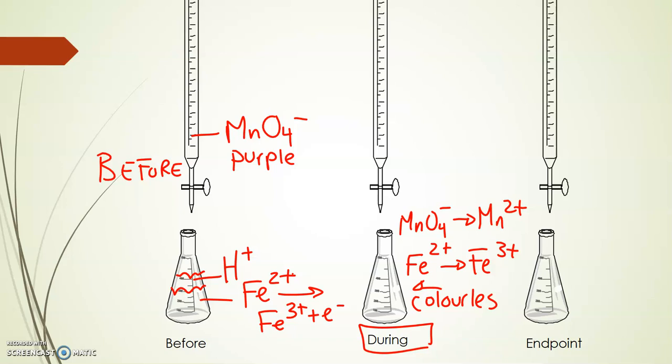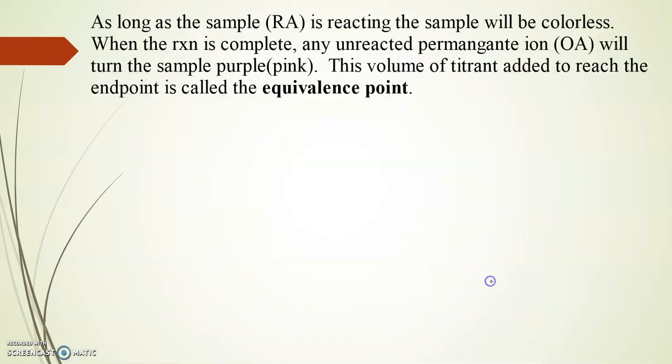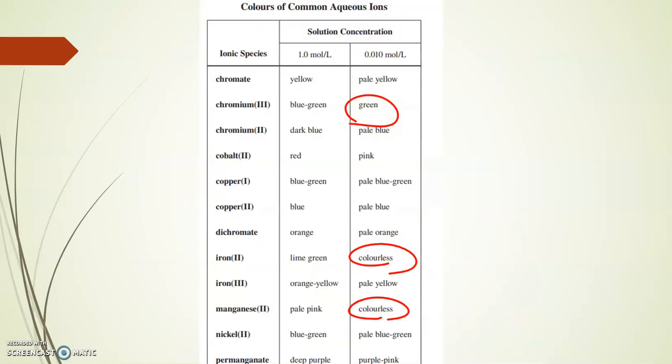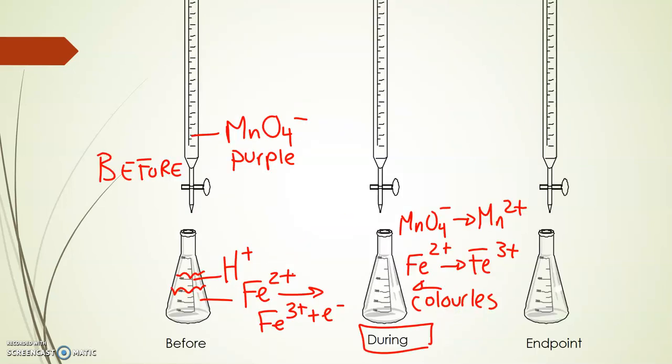Now during the titration, Fe2+ is oxidized to Fe3+. Fe3+ is colorless or it's colorless at low concentrations. If we look at Fe2+, it's pale yellow. But pale yellow when it's super dilute will be colorless. So during the titration, we're going to see colorless. As permanganate from the burette enters into the flask, it quickly gets converted to Mn2+. That Mn2+ is also colorless. So during the titration is colorless.